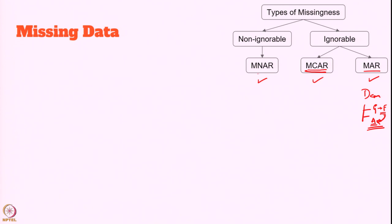MNAR stands for missing not at random. The missing values depend on the observed data, and if there is some structure or pattern in the missing data that other observed data cannot explain, it is MNAR. For example, in an income field, if most information provided contains missing values, there are chances they may have many income sources — we cannot neglect or easily impute this type of data.